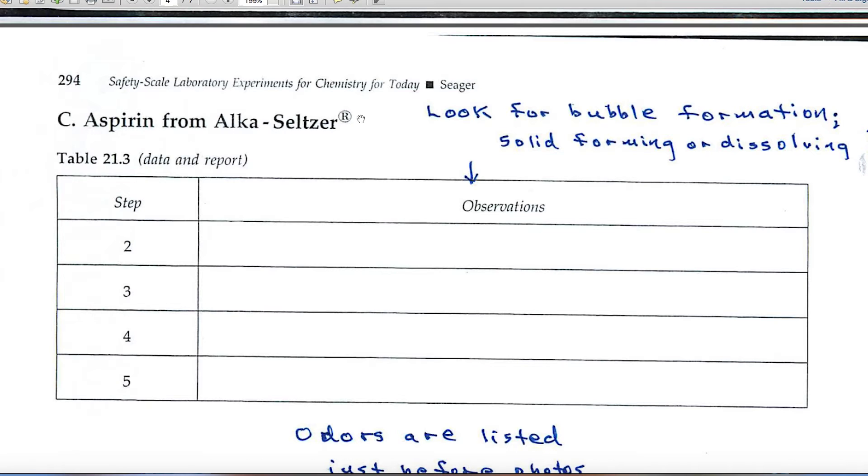In Part C, we're looking at the aspirin from Alka-Seltzer. And under the observations, again, you'll look for bubble formation, the evolution of a gas, and is there a solid forming or dissolving? That's the kind of terminology that you'll be using in your observations.